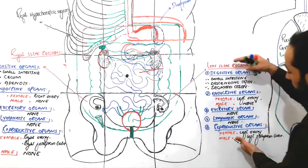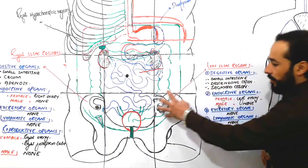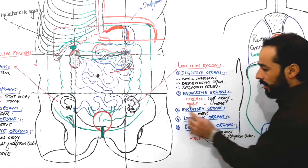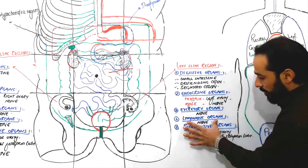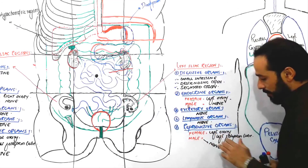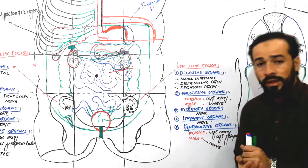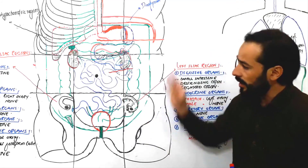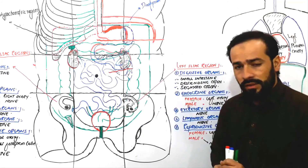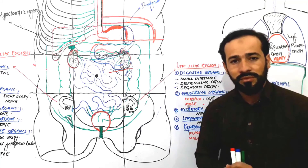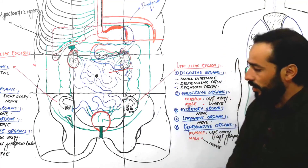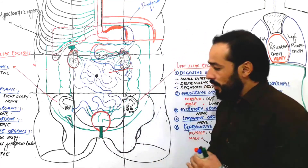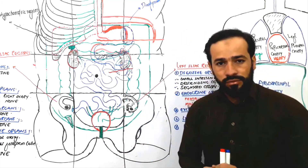So these were the organs found in the left iliac region: the digestive organs, the endocrine organs, the excretory organs, the lymphatic organs, and the reproductive organs. I hope you are clear about the organs present in the left and right iliac regions and other regions. Links to those videos will be in the description. Let's move forward to the organs present in your hypogastric region — see you in the next lecture, thank you.